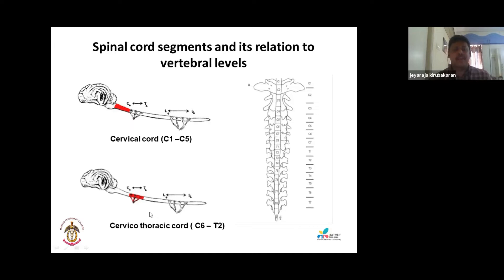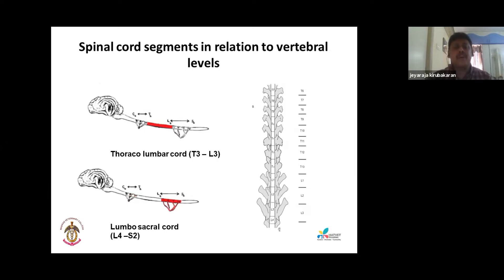C6 to T2, the cervical-thoracic cord, carries the LMN for the forelimbs and UMN axons for the hind limbs. T3 to L3, the thoracolumbar cord, carries the UMN for hind limbs. The lumbosacral cord, L4 to S3, carries the LMN for the hind limbs and has no UMN.